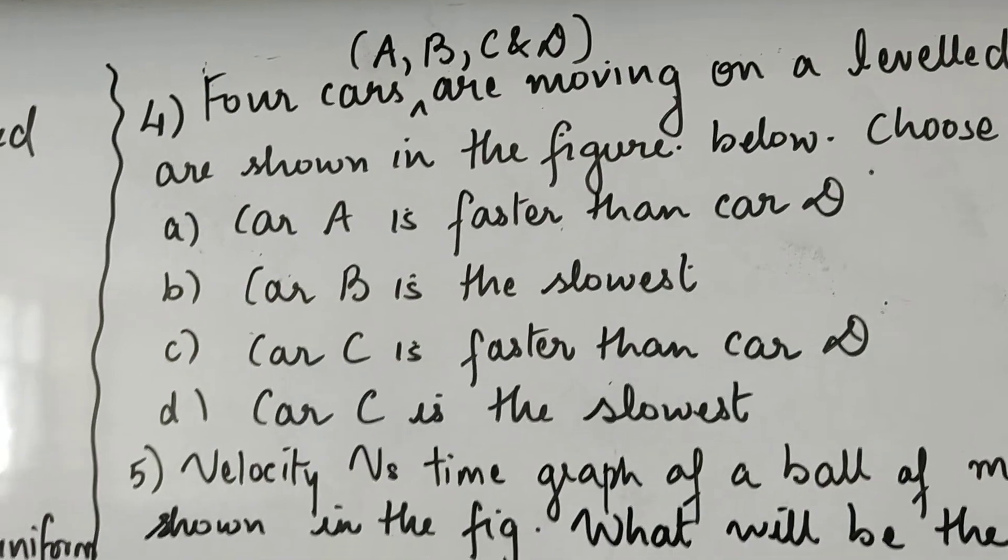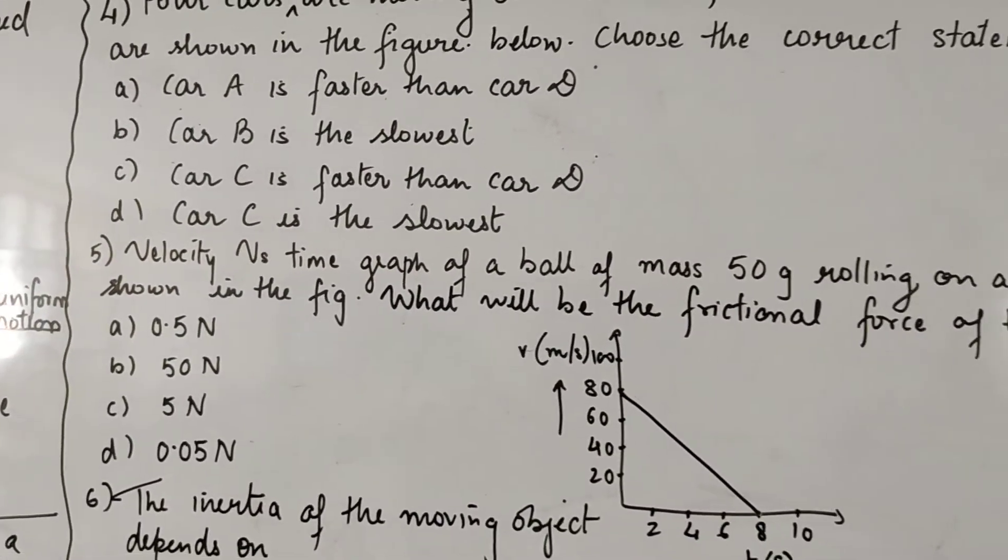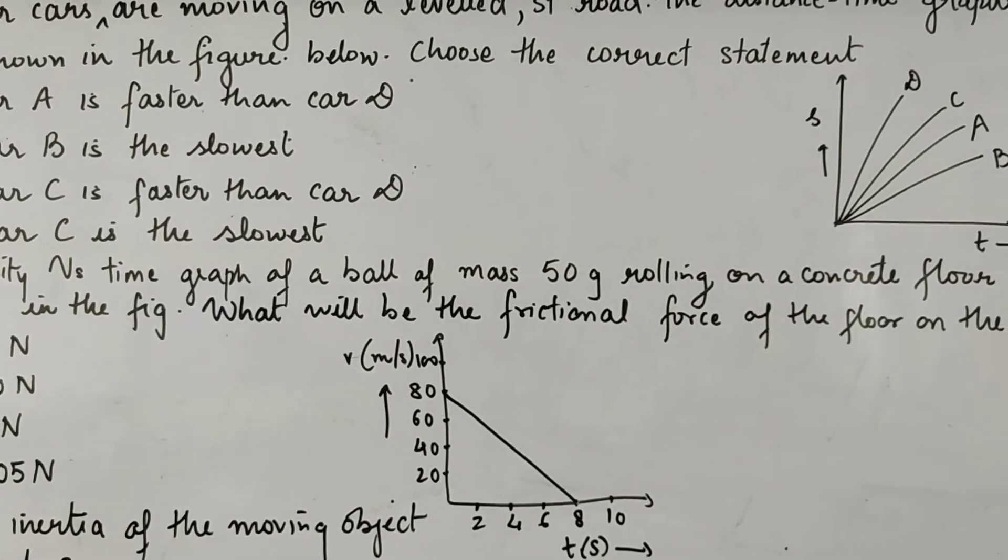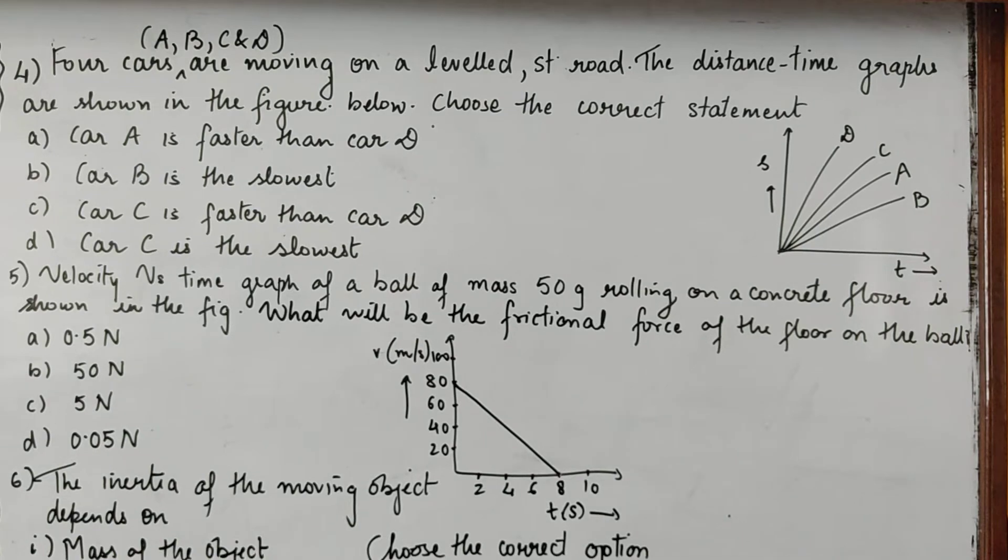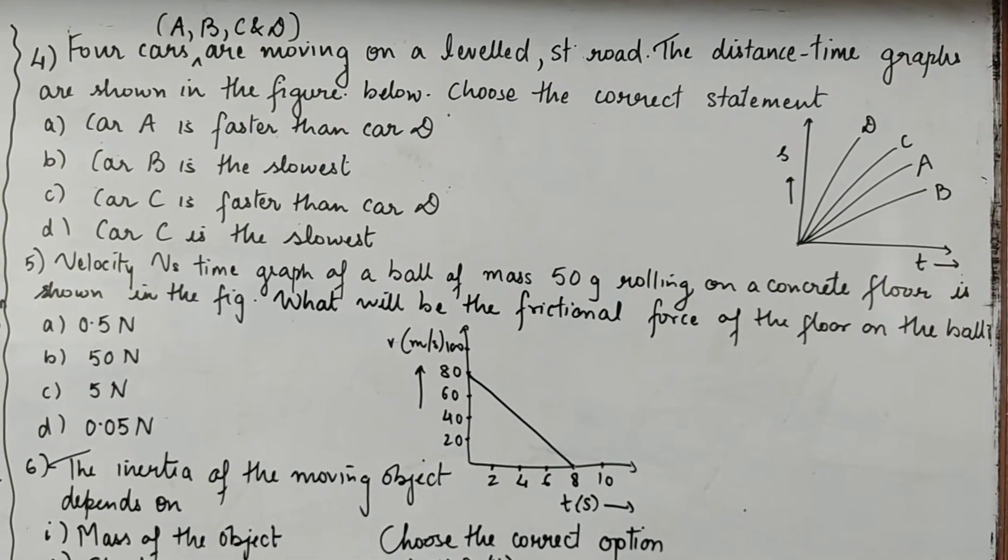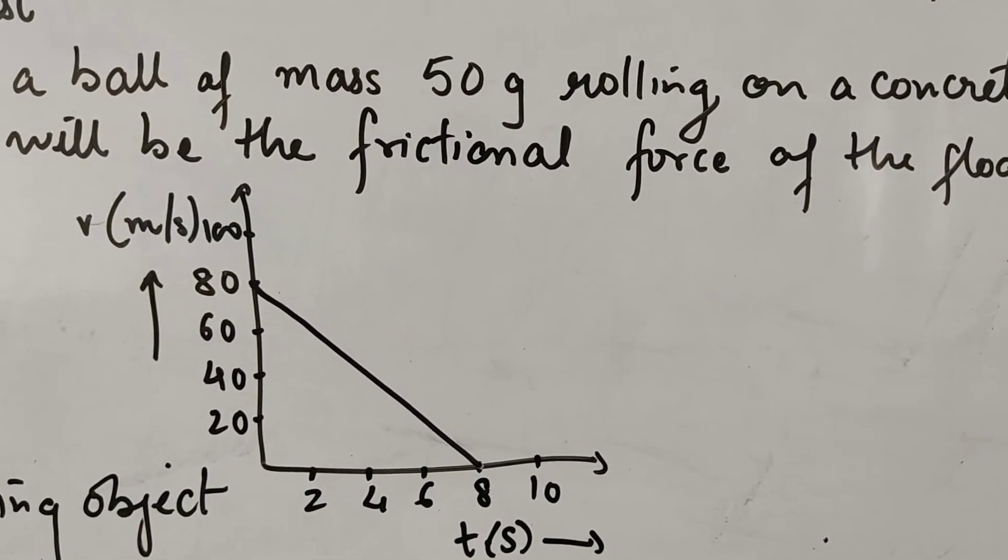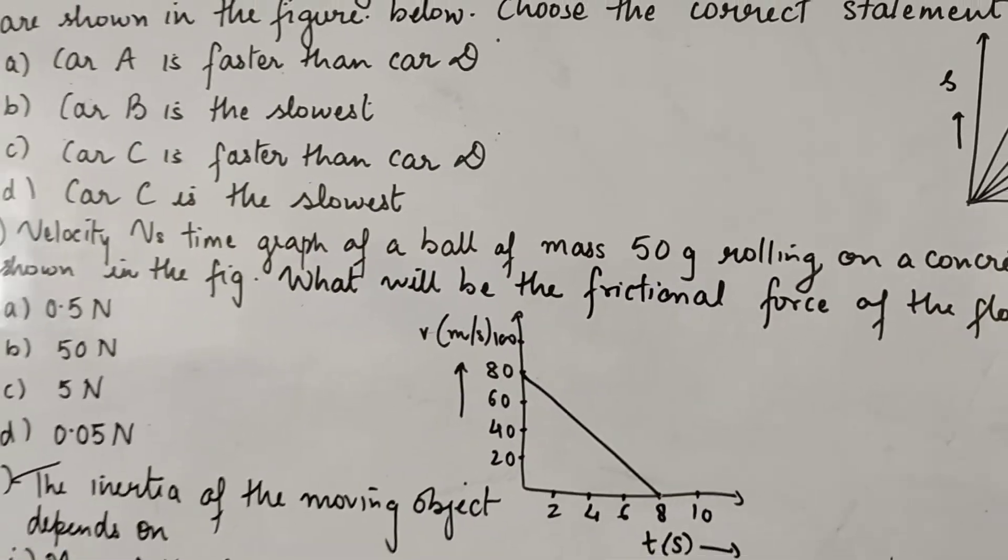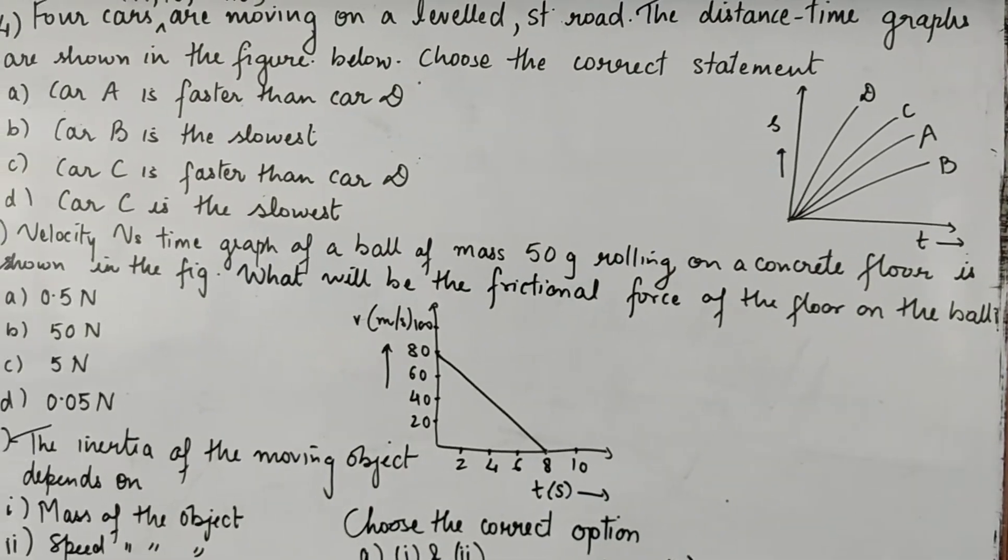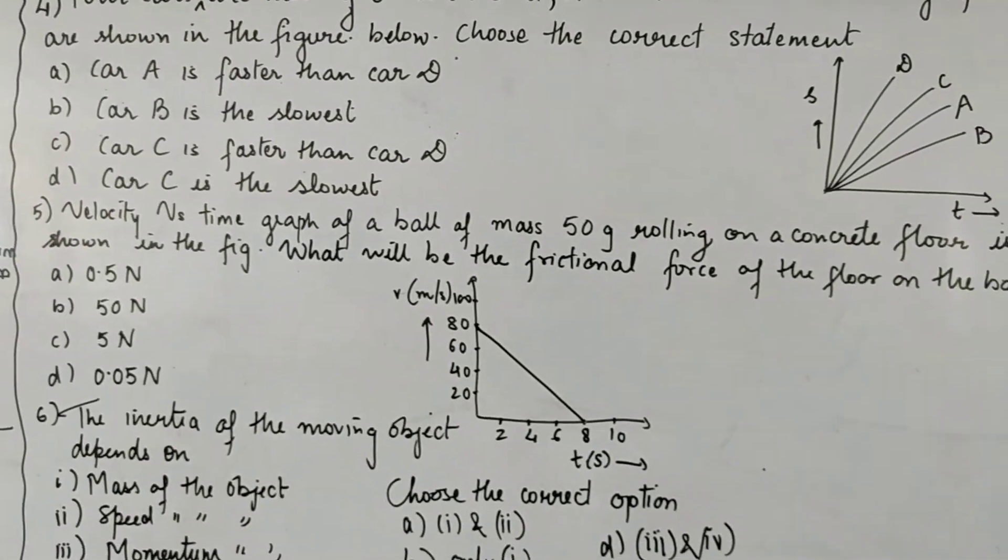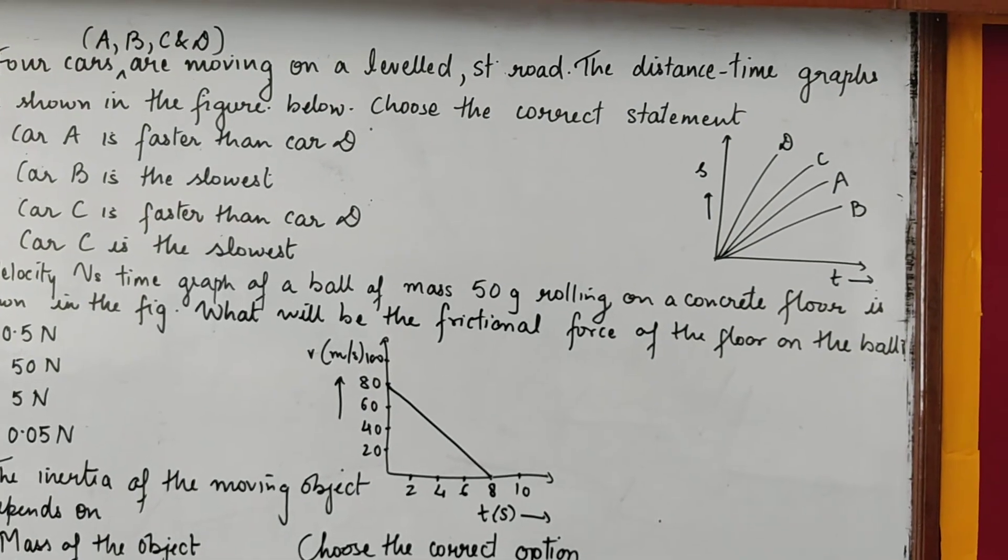Now let us have a look at the fifth MCQ. Velocity time graph of a ball of mass 50 grams. So what is the mass of the ball? 50 gram. And this is a graph, VT graph for that ball.